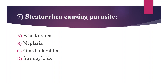Seventh question: Steatorrhea-causing parasite — option A. Entamoeba histolytica, option B. Naegleria, option C. Giardia lamblia, option D. Strongyloides. The answer is option C, Giardia lamblia. Steatorrhea is a condition where there is an increase in fat excretion in the stool. The important pathogenesis of Giardia lamblia is malabsorption of fat.